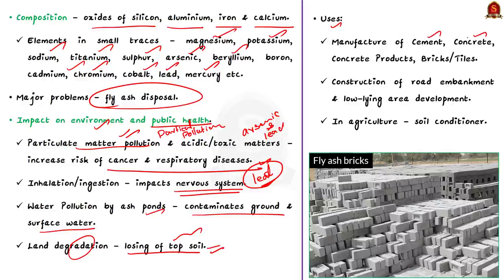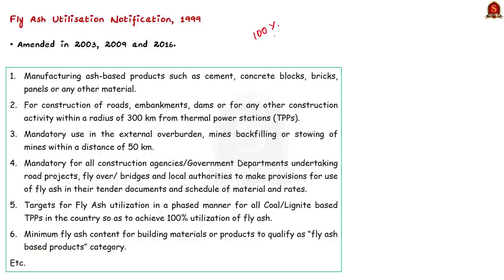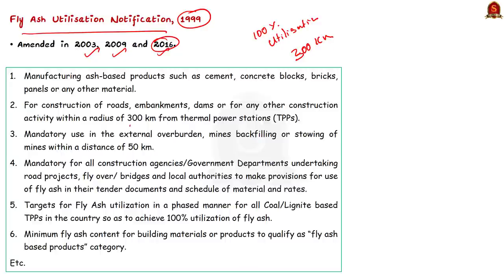Since ash ponds have environmental concerns, nowadays dry fly ash is used for many purposes. It is used in the manufacture of cement, concrete, concrete products and also in the manufacturing of bricks and tiles. It is also used in the construction of road embankments, low lying area development, and it also finds usage in agriculture as a soil conditioner. Even our government is pushing for 100% utilization of fly ash. Initially in 1999, the Government of India notified the fly ash utilization notification, which has been amended in 2003, 2009 and lastly in 2016. This notification mandates the use of fly ash for construction activity within a radius of 300 kilometers from thermal power plants.